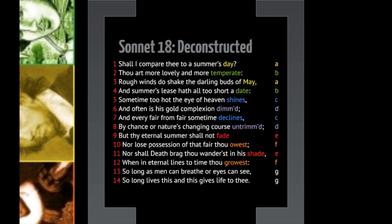Last week we talked about the sonnet structure — it's 14 lines, and of course this one is. It has the perfect Shakespearean sonnet rhyme scheme: A-B-A-B, C-D-C-D, E-F-E-F, G-G. I've color coded it here so you can see how the rhymes work. In the first four lines, every other line rhymes, then that pattern repeats for lines five through eight, again through nine through twelve, and then we have that rhyming couplet in lines 13 and 14.